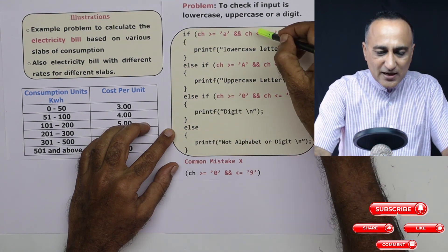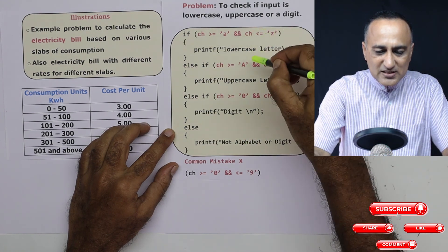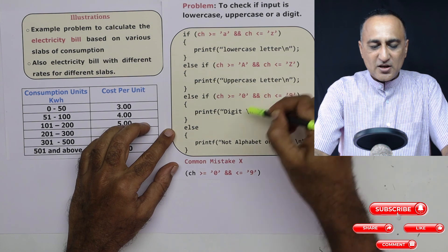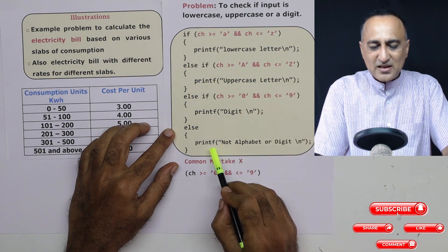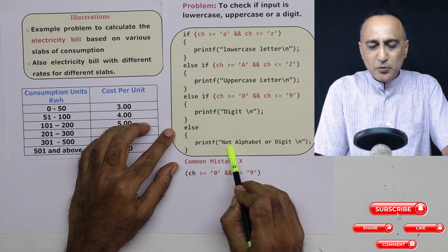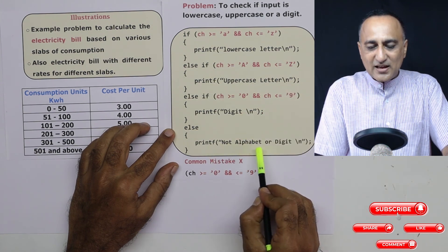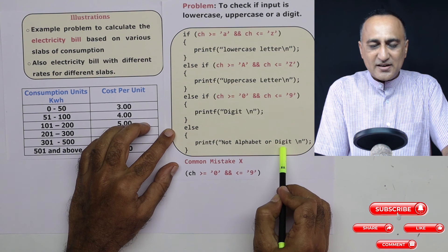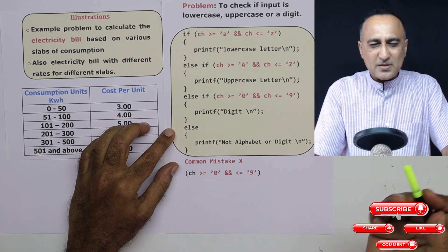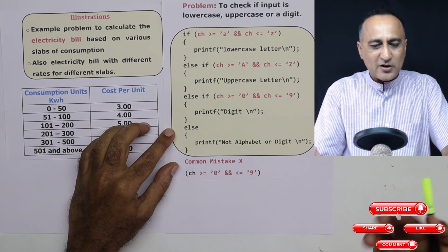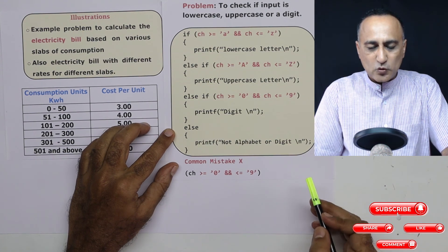It has to be either lowercase, uppercase, or a digit. Otherwise, the else statement says the input character is neither an alphabet nor a digit — it could be some special character like a question mark, equals sign, and so on.